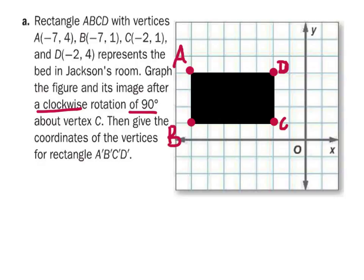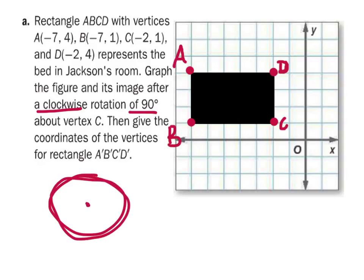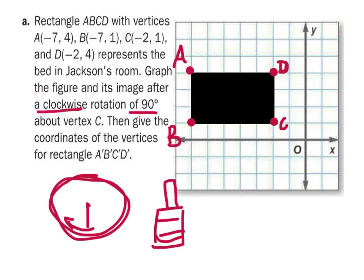So clockwise — some of you may remember, if this is my clock, I've got a point right here. If this is one of the hands, it's going to move in this direction. So that's clockwise. Let's go ahead and start rotating this. I'm going to try to do this slowly so you can see how this works. It says that this is going to rotate about vertex C, and I'm rotating it to the right because it's clockwise.